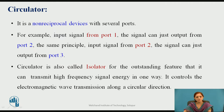For example, if the input signal is applied to port 1, the signal can just come out of port 2. The same principle applies when the input signal is applied to port 2 — the signal can just output from port 3. This circulator is also called an isolator for its outstanding feature that it can transmit high frequency signal energy in one way only, controlling electromagnetic wave transmission along the circular direction. Generally, we use the 3-port circulator and 4-port circulator.